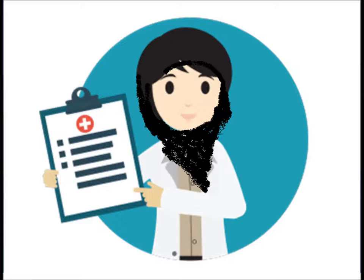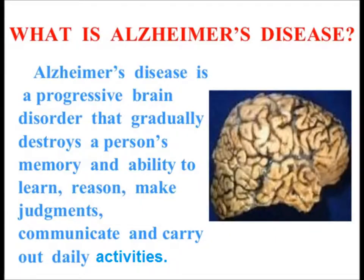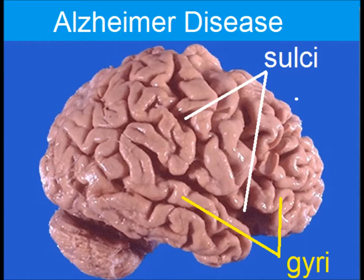The second scenario is a 75-year-old female, a known case of Alzheimer's disease. Alzheimer's disease is a cause of dementia, which means loss of memory. It occurs in old age and is characterized by decreased ability to learn, reason, and make judgments. These patients find it very difficult to carry out daily activities, and there is progressive brain tissue loss, with widened sulci and shrunken gyri.